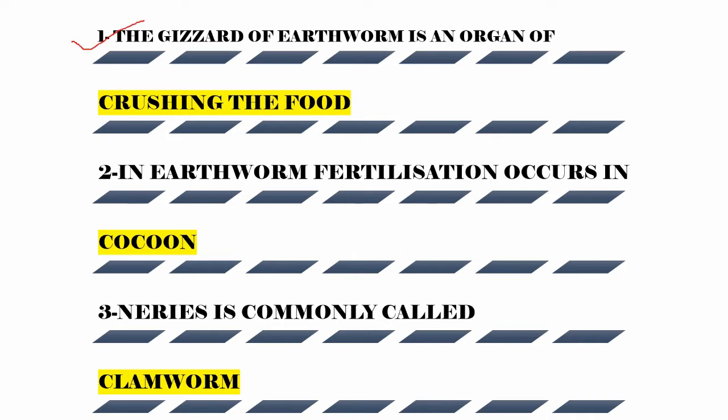Why is the gizzard of earthworm an organ of the digestive system? The digestive system consists of: mouth, pharynx, esophagus, crop, and gizzard, then intestine. The gizzard of the earthworm is the organ responsible for crushing the food — the food is being crushed.